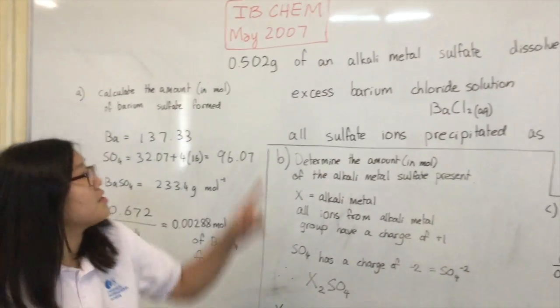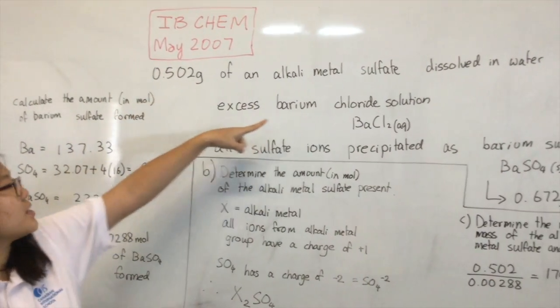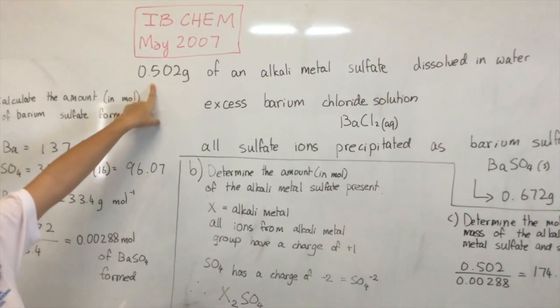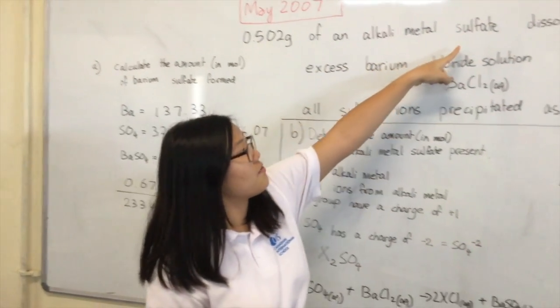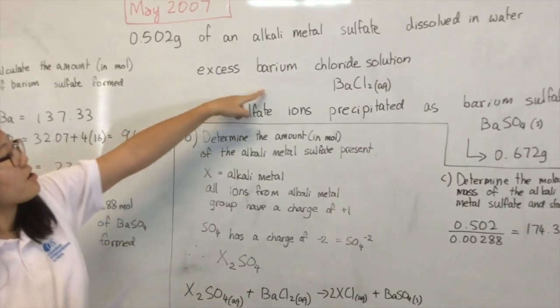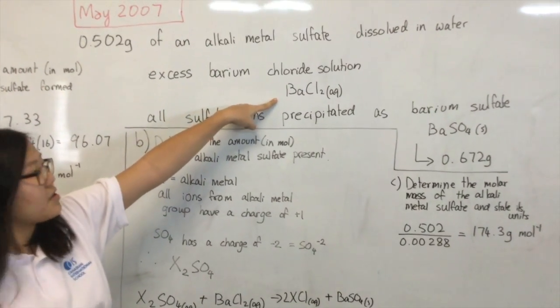In this question, this is the information we get from the question directly: 0.502 grams of alkaline metal sulfate and excess barium chloride. This is the formula for it.